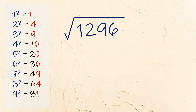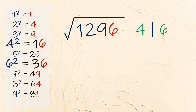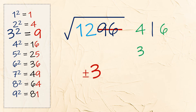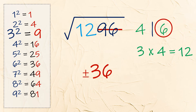Let's try another example — you'll get used to it if you keep practicing. Square root of 1296. The last digit is 6, so we'll use 4 and 6. Cross out the last two digits — now we only have 12. Look for 12 or less in the list of squares. 16 is too much, so we use 9, and the square root of 9 is 3. Our first digit is 3. Multiply 3 by the next number, 4 — we get 12. Since 12 is not less than 12, we use the higher number. Our answer is positive and negative 36.